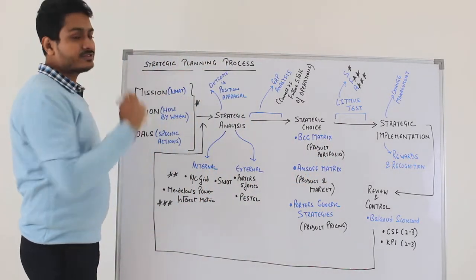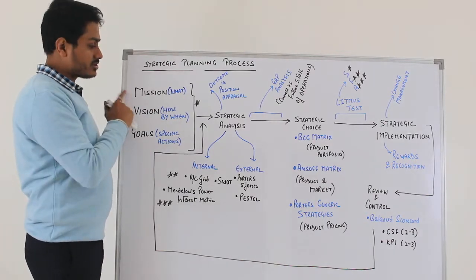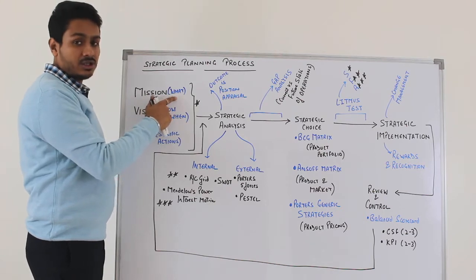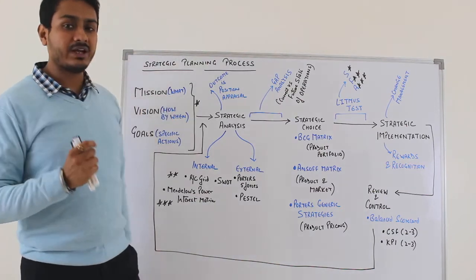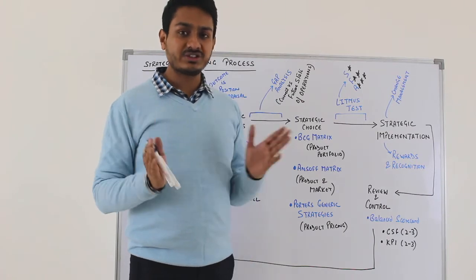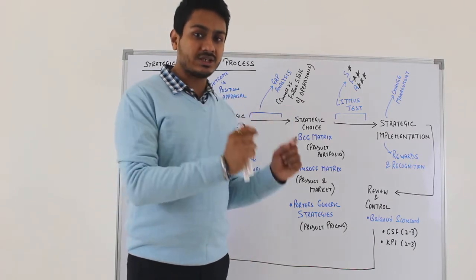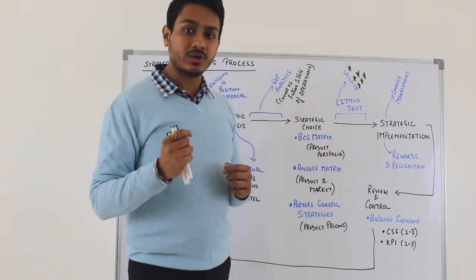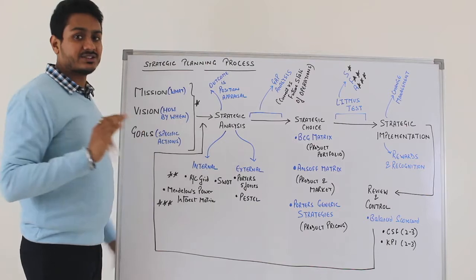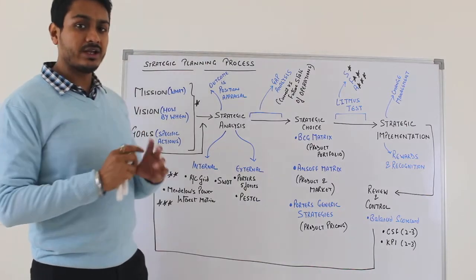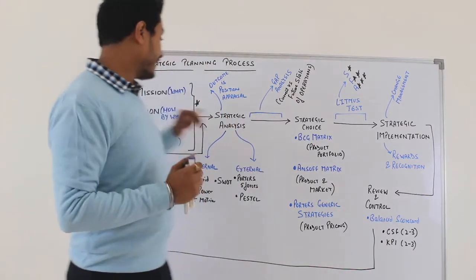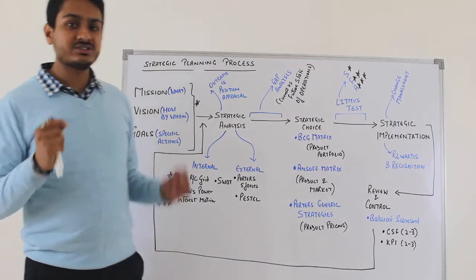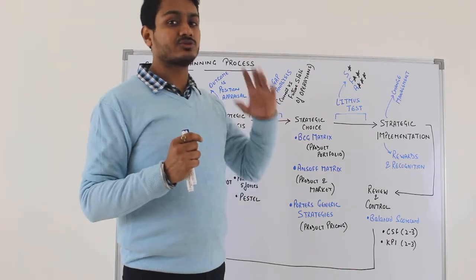The journey of a strategic planning process starts from a mission statement. Against the mission statement I've written 'what.' The mission statement of any organization does not change. It is what the organization wants to do, what the organization wants to achieve. It's black and white — cast in stone, communicated to all stakeholders, and it does not change. If you want to build a hierarchy, the mission statement comes on top.